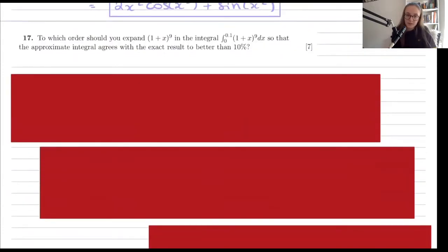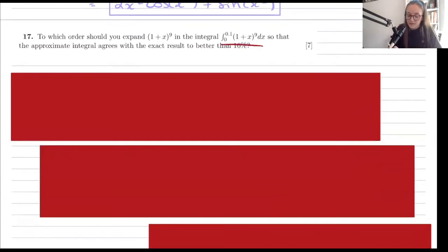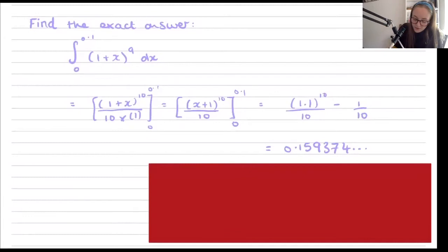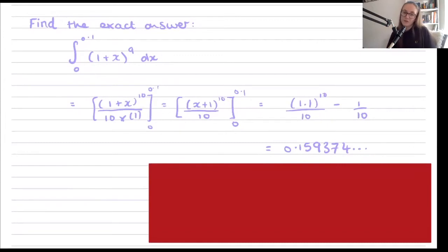This next question is a little more involved — it includes binomial expansion. It asks: given this integral, how many terms do we need in order to get within 10% of the exact answer? First we want to find the exact answer by integrating the polynomial. Using the chain rule analogy for integration, we raise the power, divide by the power, and then divide by the derivative of the inside function.